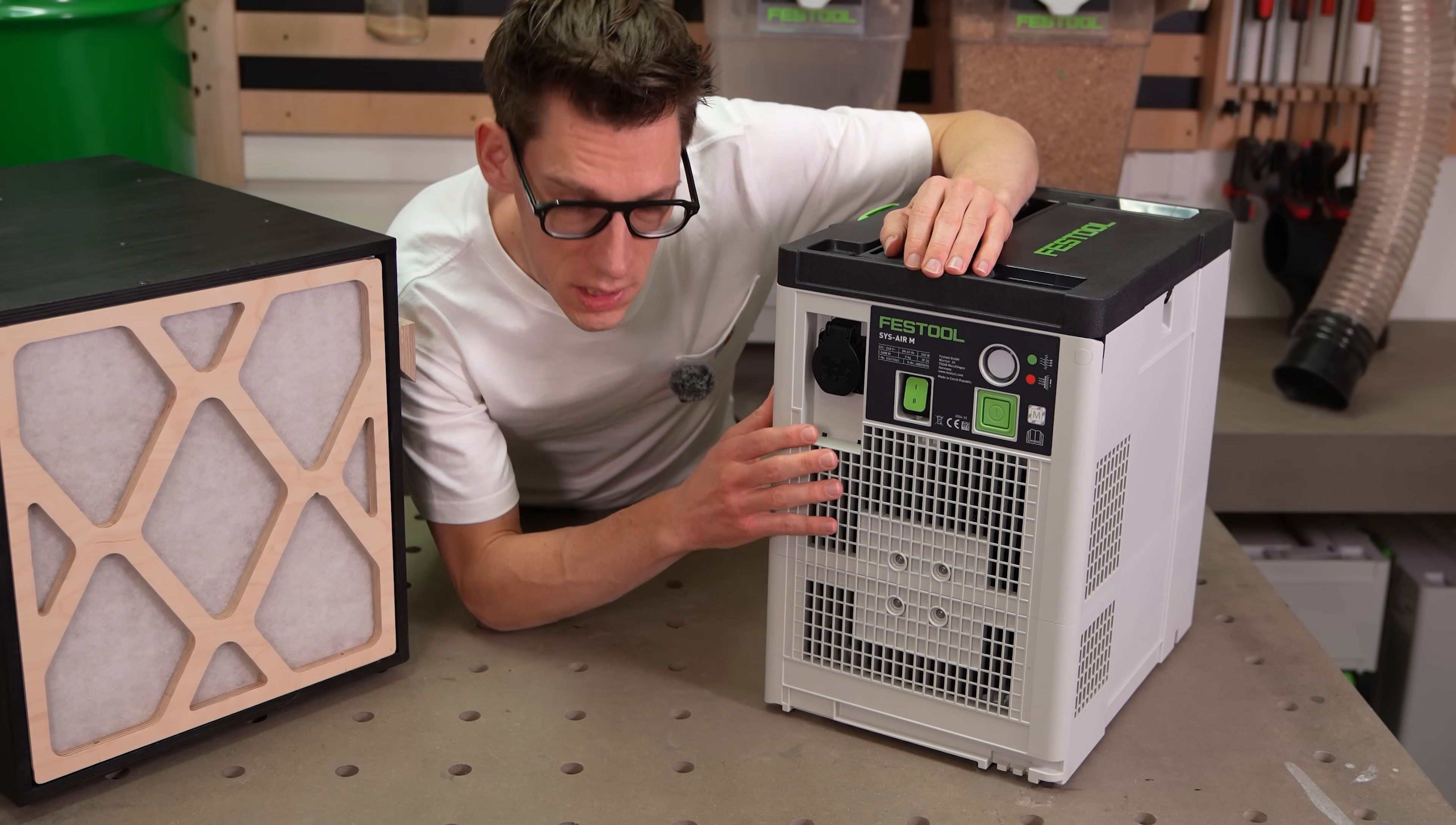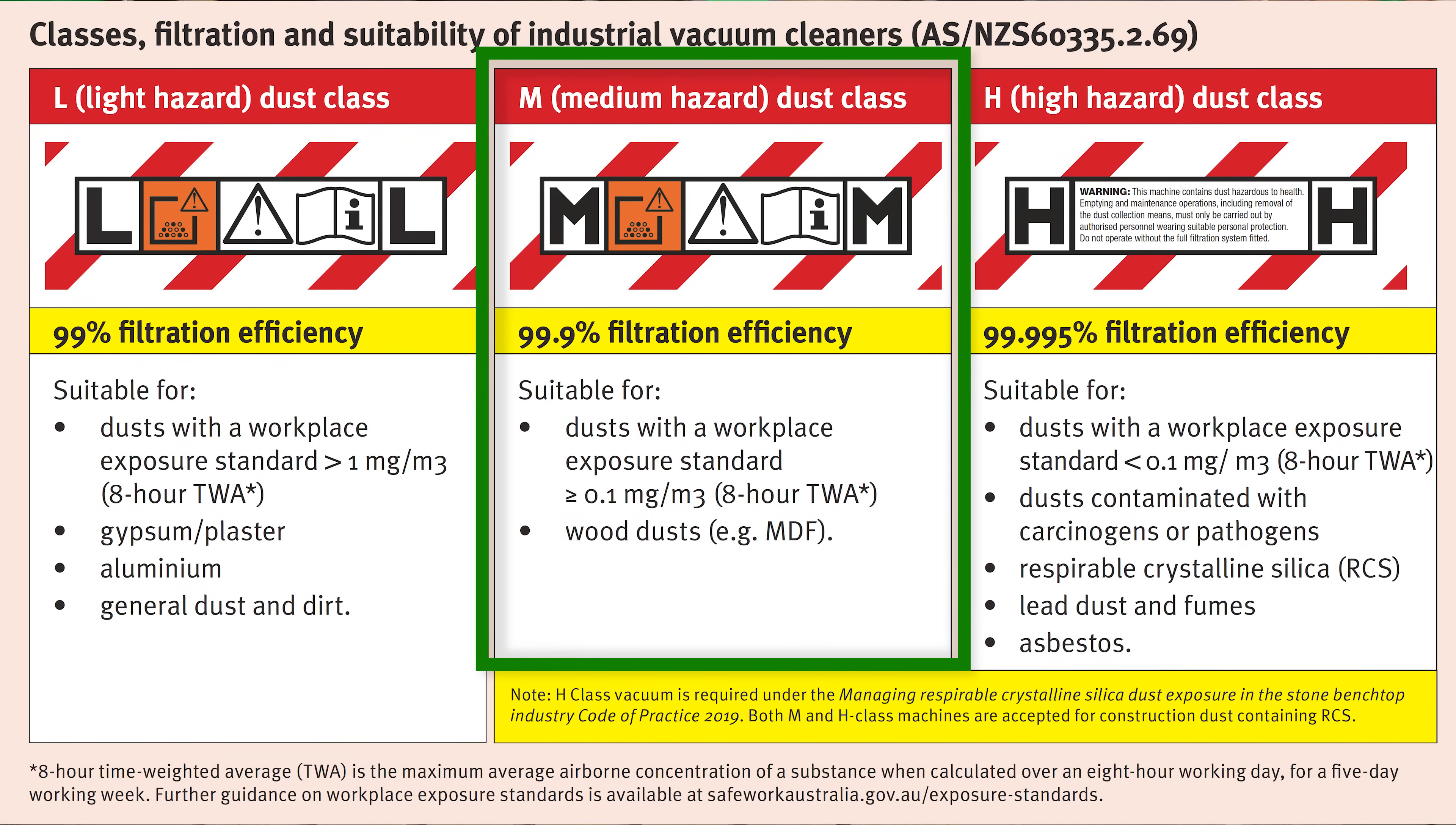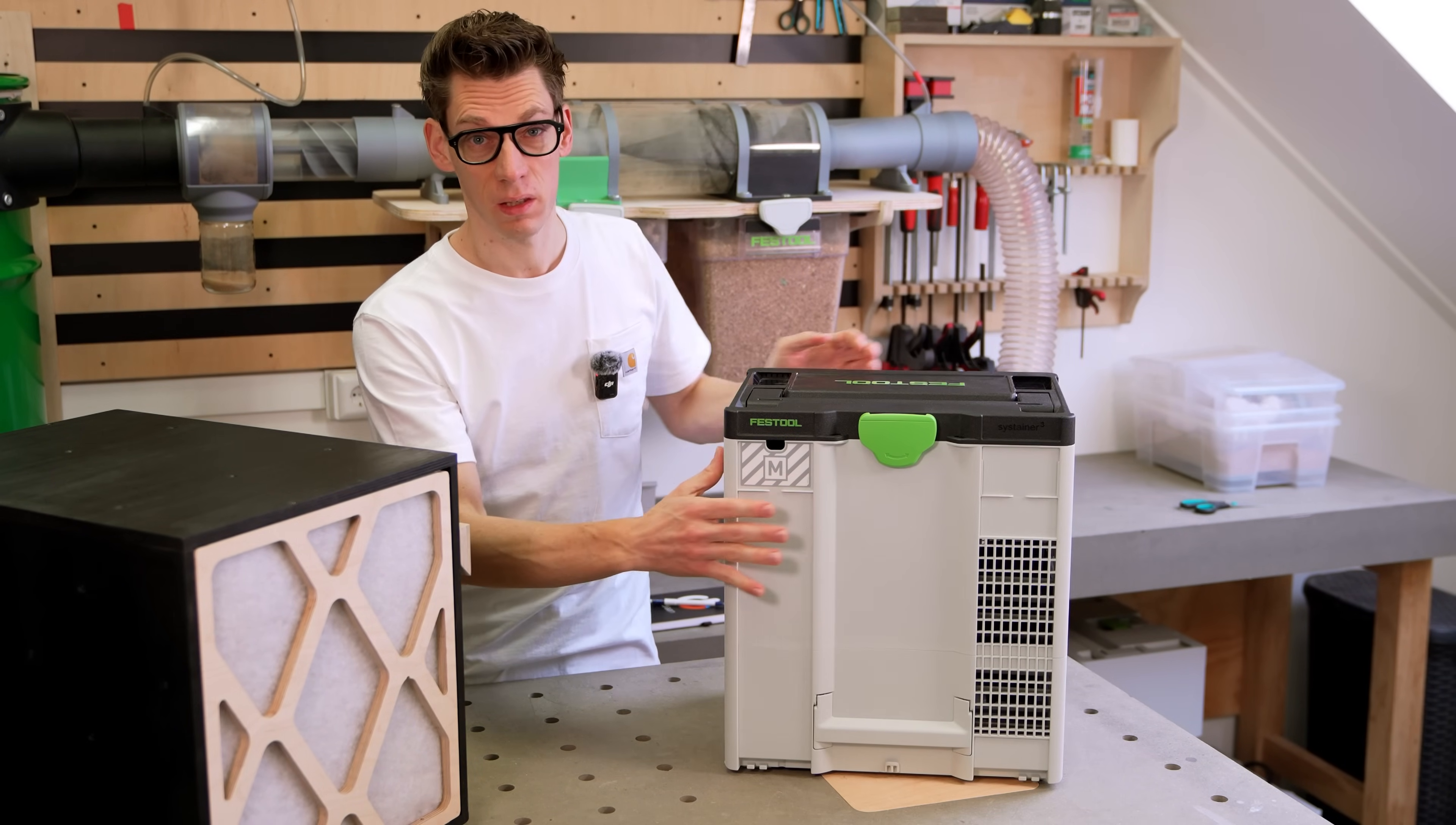And this is the new SIS Air from Festool. It's an air purifier with an M rating on it, and I could borrow this from a friend, so thank you for that. I'm interested in the filters they use, so let's take a look inside.